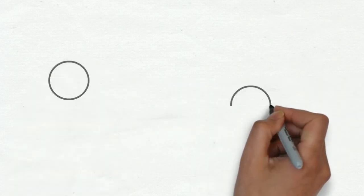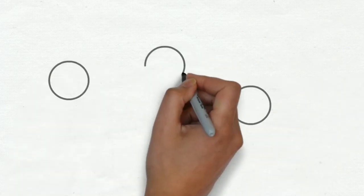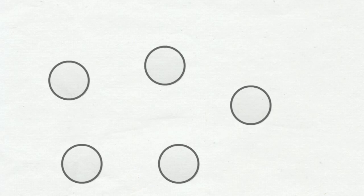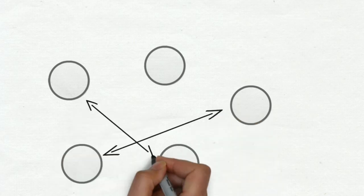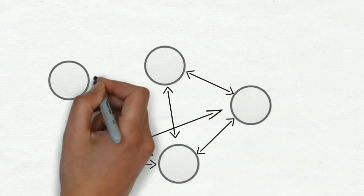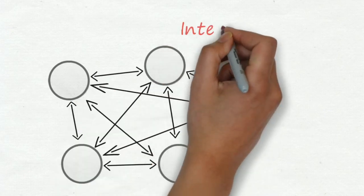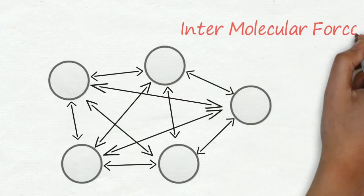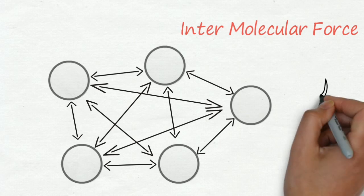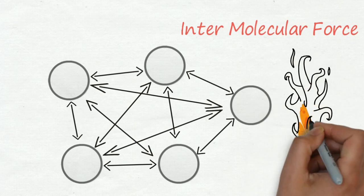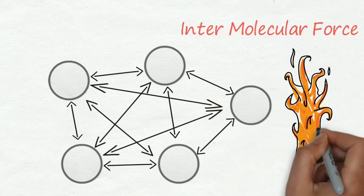Molecules of any liquid are attracted to each other with some force. This force is known as intermolecular force. In order for molecules to leave the liquid substance, they must overcome this force. In both processes, molecules must be separated from the liquid substance, so it requires energy to overcome this force, and this energy is available via heat.